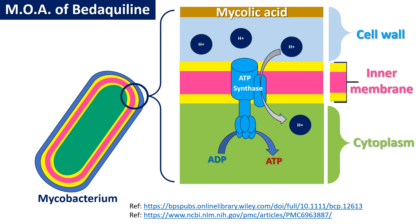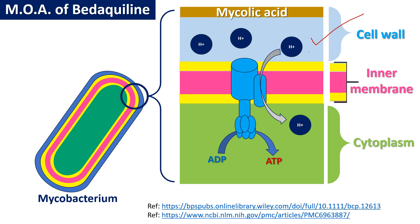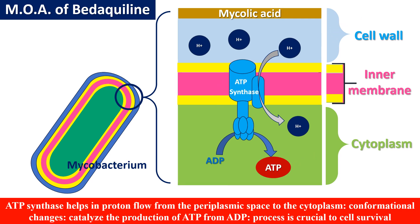To understand the mechanism of action, we look at the structure of Mycobacterium, specifically its outer part consisting of the cell wall and inner membrane. The outer part has mycolic acid, which is unique to Mycobacterium. The periplasmic space contains protons. Under the cell wall, there is an enzyme called ATP synthase, which is the target of Bedaquiline. This enzyme helps in the generation of ATP, which is essential for the survival of Mycobacterium.